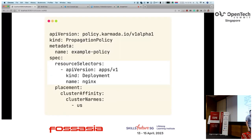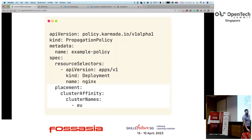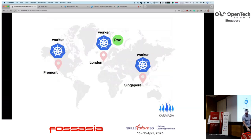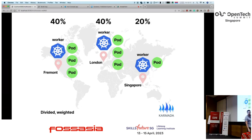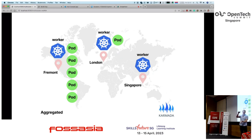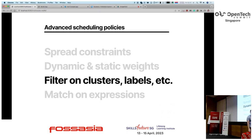Karmada, which is essentially a glorified control plane for clusters, supports something called policies. You can say: I want this deployment to go to just the US cluster. If you change the policy to EU, the pod moves to Europe. There are many ways to describe the desired state: you can say 'duplicated' and Karmada deploys two pods per cluster, or 'divided' with different weights, or 'aggregated' — filling one cluster first and then moving on to the next.